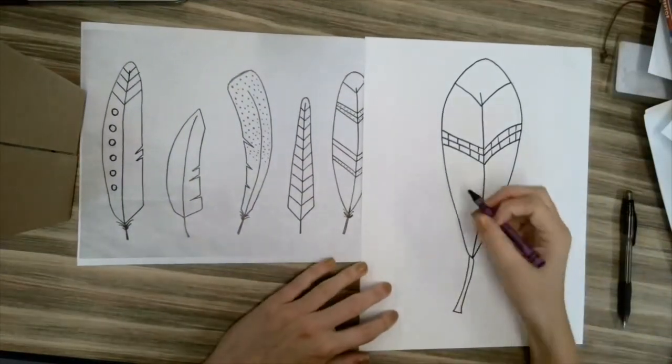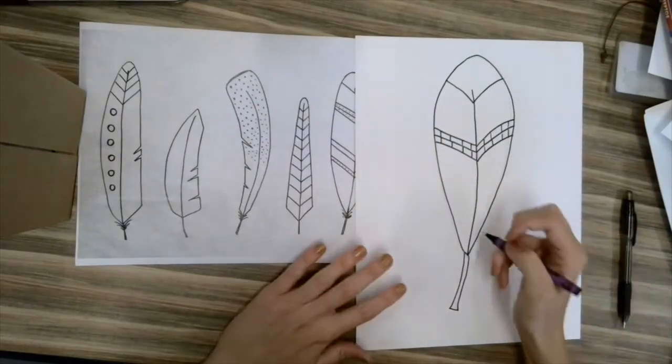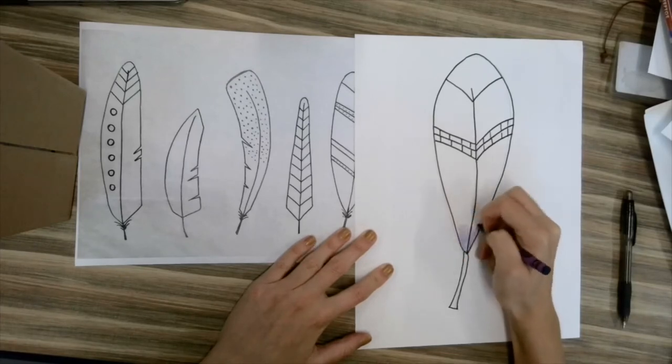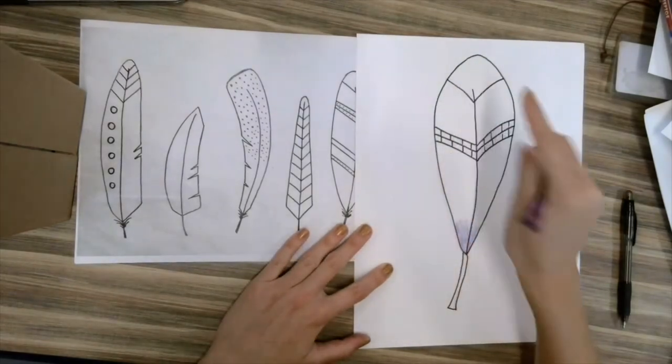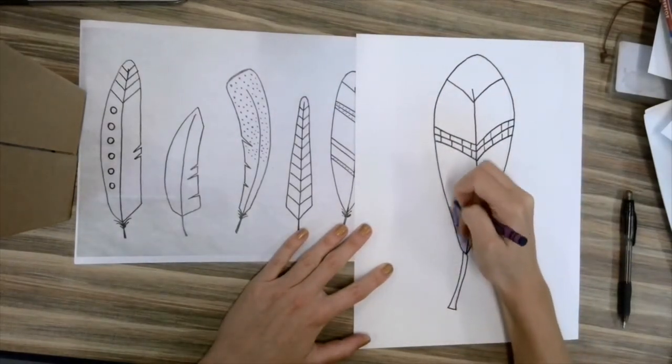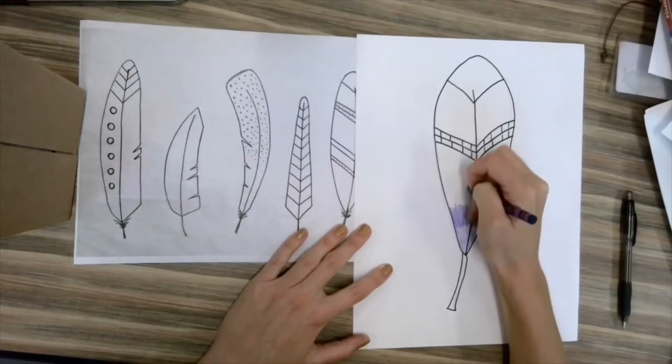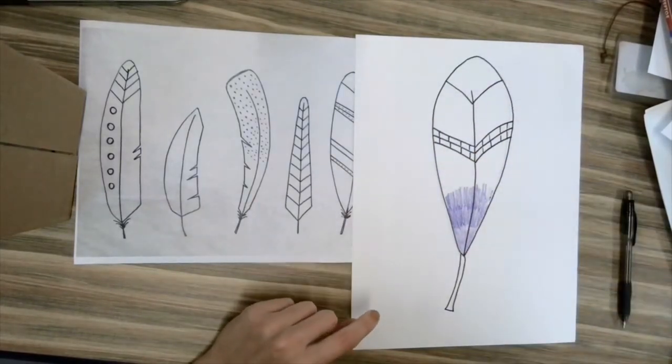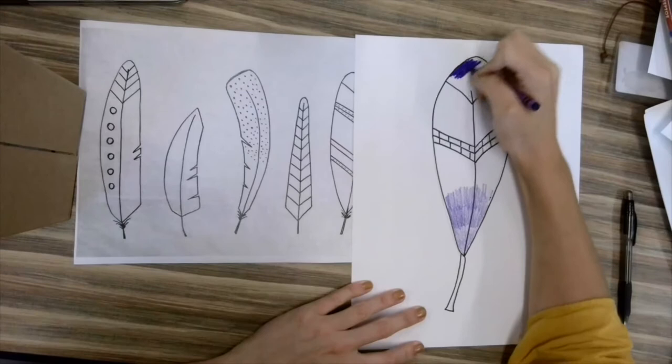So flip it over. You could start dark or you could start light. It's up to you. I'm going to start light. So I barely am going to color my feather, a very light, soft purple. And then as you start moving up your feather, I want you to start to push a little bit harder. And you should slowly start to be able to see your feather get darker. If this seems like it's pretty tricky for you, come up to the top and start coloring super, super, super dark.